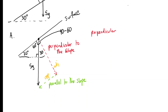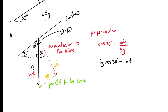For the perpendicular component we're dealing with adjacent and hypotenuse, and 5g is the hypotenuse. Since we're dealing with adjacent and hypotenuse we should use cosine: cos 30° equals the adjacent divided by 5g. Rearranging, the perpendicular component equals 5g cos 30°.